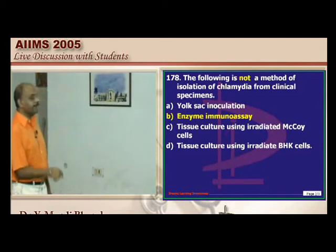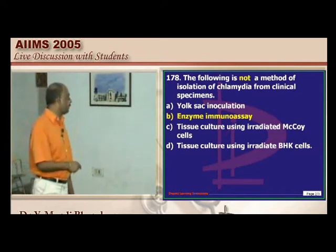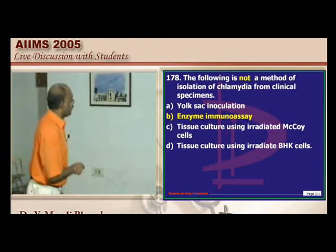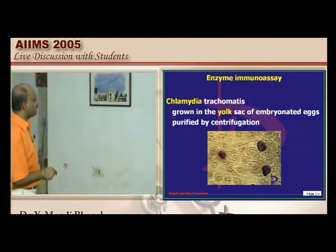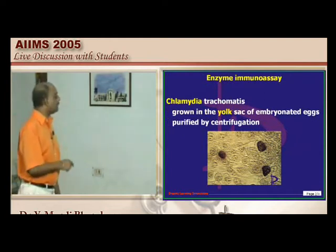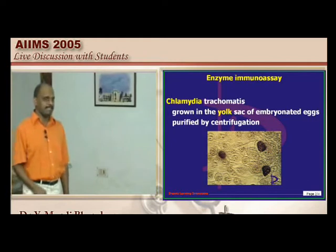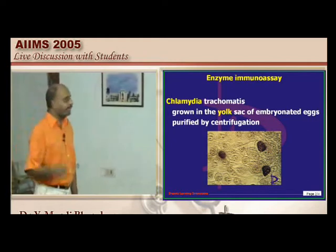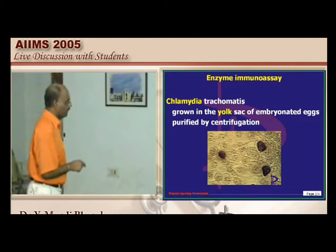Chlamydia identification: culture involves yolk sac inoculation, McCoy culture, and BHK cells. There is not much role for ELISA enzyme immunoassay. Chlamydia trachomatis — a McCoy cell culture is the method of choice.